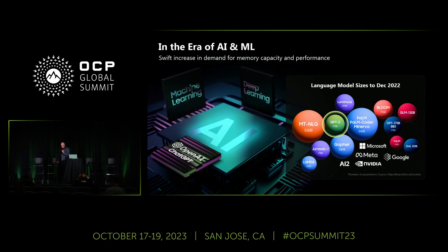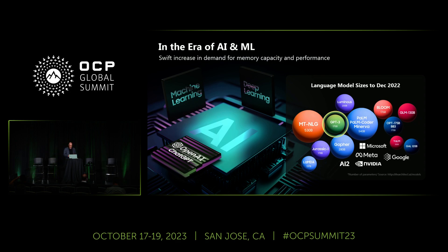AI and ML are certainly the dominant applications we see today. As we also learned this morning, large language models are driving the need for more and more memory. Don't forget in-memory databases, which are becoming very important. We're grounded that billions and billions, if not trillions of parameters need a place to be stored.